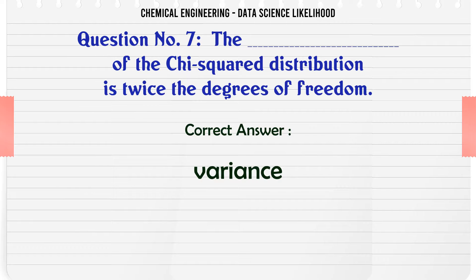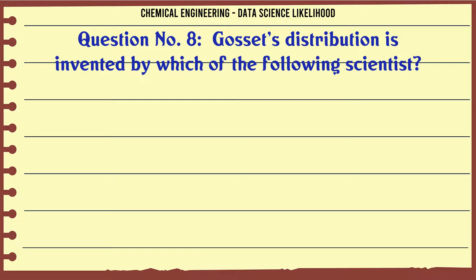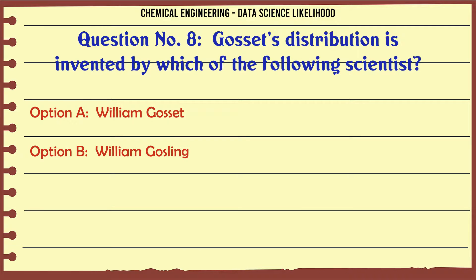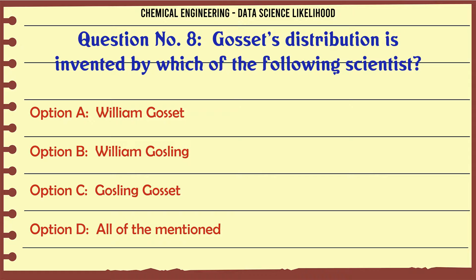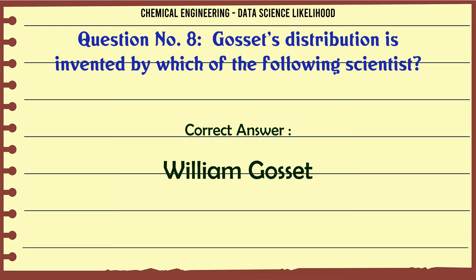Gossett's distribution is invented by which of the following scientist? A. William Gossett, B. William Gossling, C. Gossling Gossett, D. All of the mentioned. The correct answer is William Gossett.